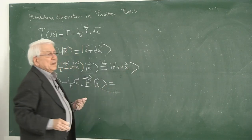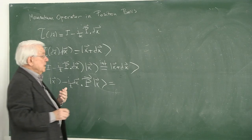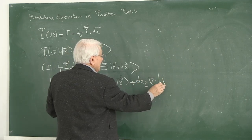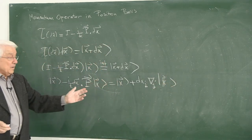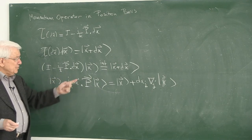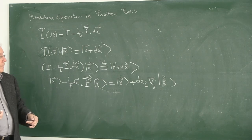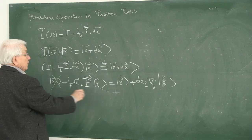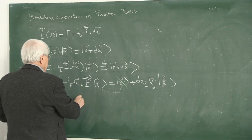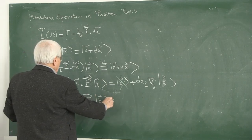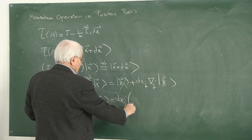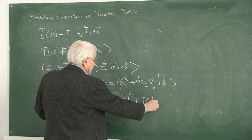The right-hand side — let me Taylor expand it — is |x⟩ plus dx times d/dx of |x⟩. In compliance with it being infinitesimal, I have used this expansion of the finite one and retained only terms of first order on the right-hand side. The first terms cancel, and what remains gives: dx_j times p_j acting on |x⟩ equals (1/iℏ) dx_j times iℏ d_j |x⟩.